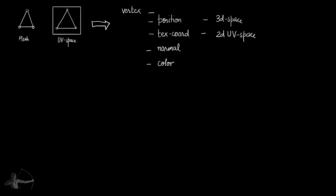Now that we have that information in the mesh, to be able to use it in the shader we will have to start reading it. The way we read the information is by defining the attribute in the vertex input. We will start packing the texture coordinate information into the packet and sending it to the vertex shader. This packet, which previously contained only position information, will now also contain texture coordinate information, and it is in the form of a struct in our shader.